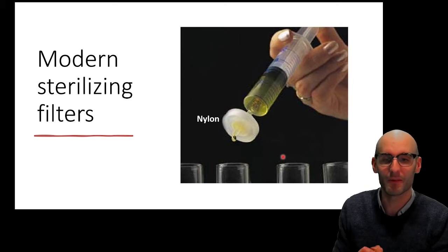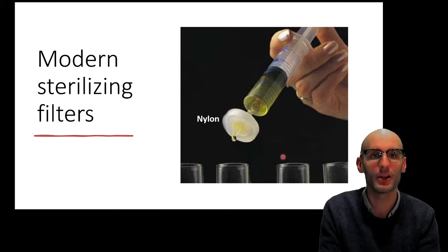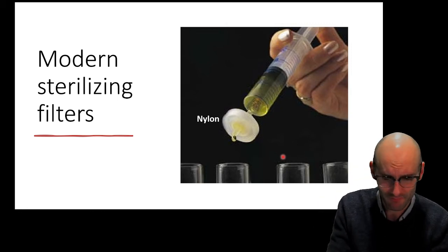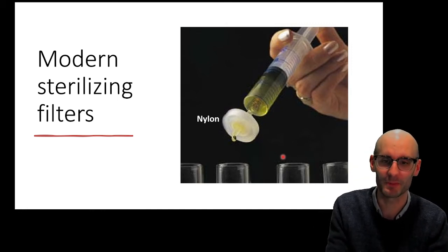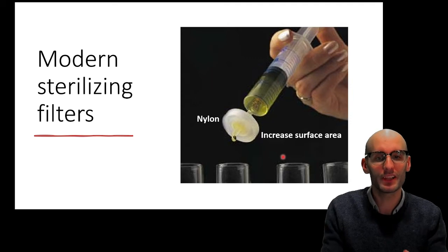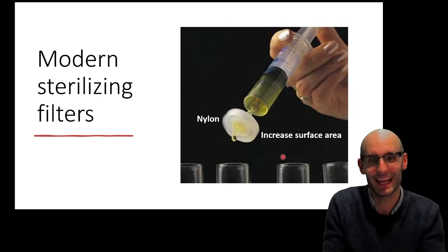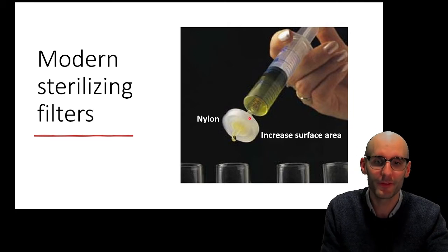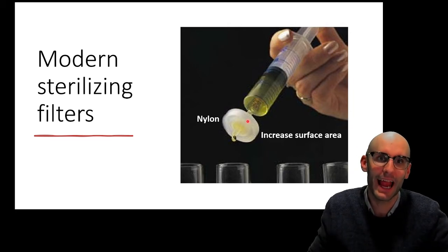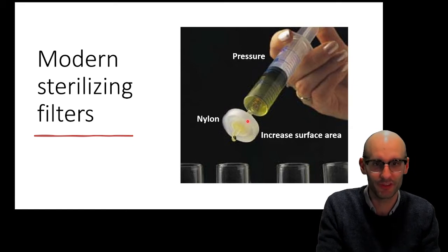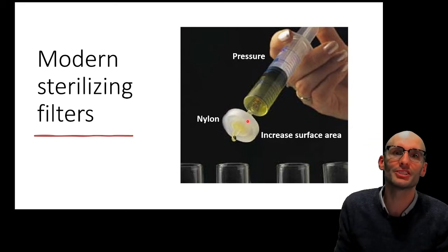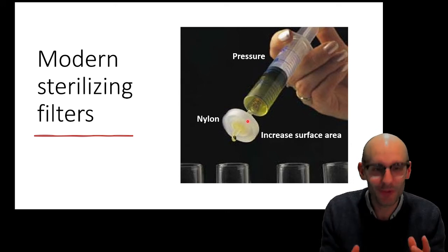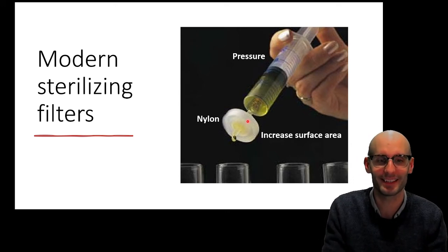Now instead of making it out of porcelain, we typically make it out of nylon because we make everything out of plastic these days. It's incredibly cheap. It's probably not good for the environment, let's be honest. But you can see here we've got this big disc here. And that's to increase the surface area. And the same thing's going on. The fluid's going in and it's spreading out across the surface of that disc to increase the surface area. Then of course we use syringes typically to apply that pressure. So we still use the Chamberland filters basically today.